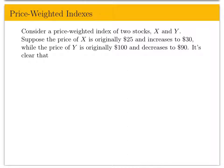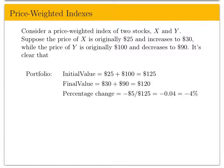Let's consider a simple example of a price-weighted index of two stocks, X and Y. Suppose the price of X is originally $25 and increases to $30, while the price of Y is originally $100 and decreases to $90. The initial value of the portfolio is $25 plus $100 equals $125. The final value is $30 plus $90 equals $120.